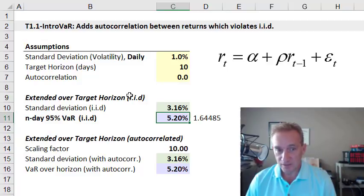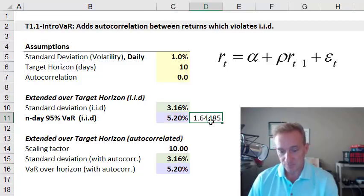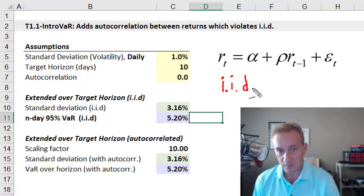However, my point here is what was that assumption that we made when we scaled it? It's IID. The specific assumption is that the returns are independent and identically distributed.